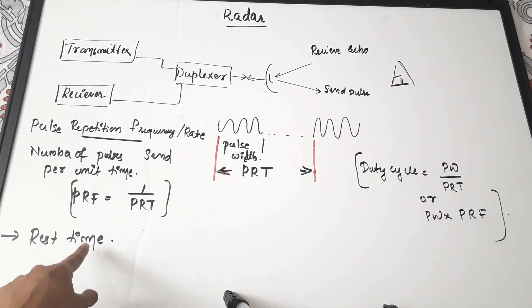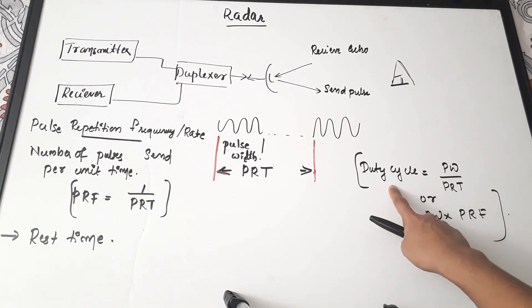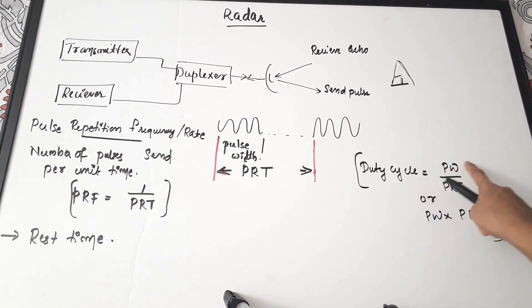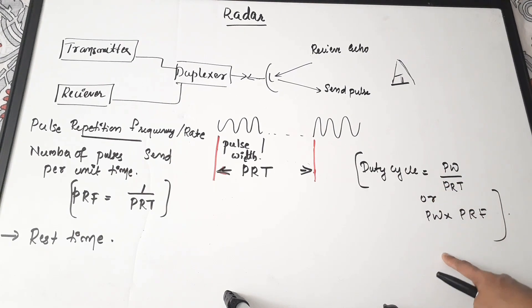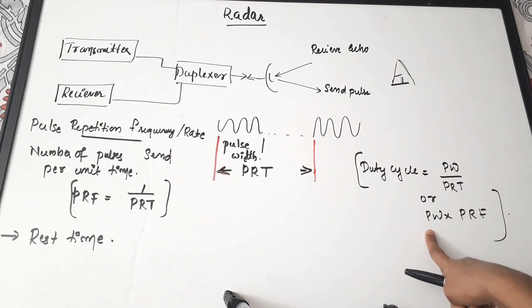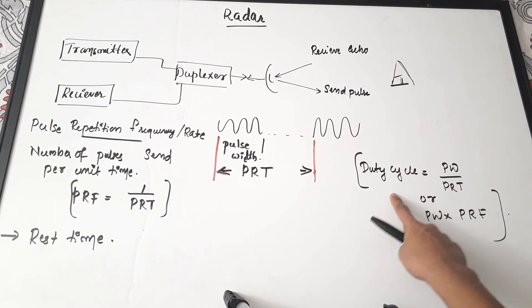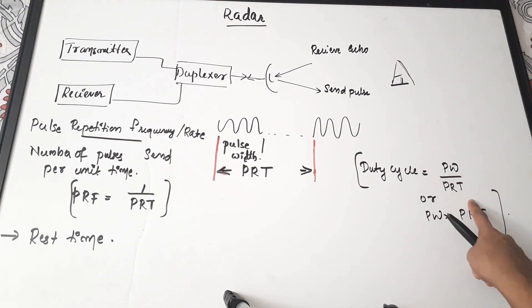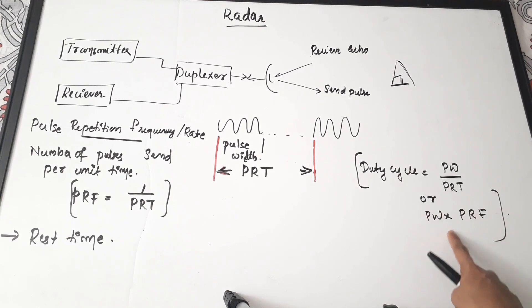Duty cycle is equal to pulse width divided by pulse repetition time, or equivalently pulse width multiplied by pulse repetition frequency. That is the duty cycle of a radar.